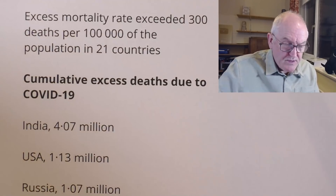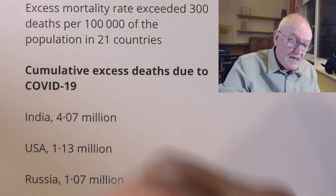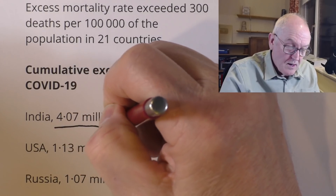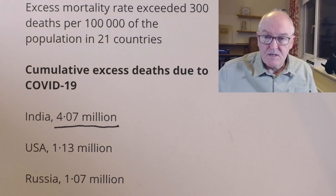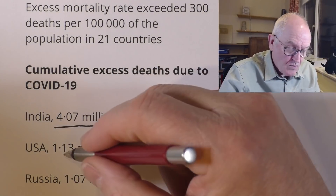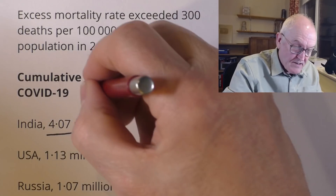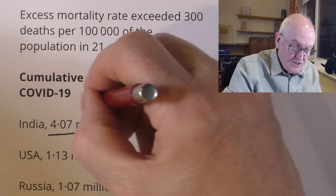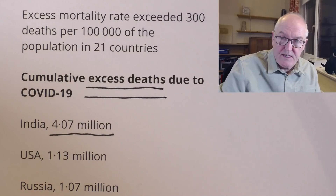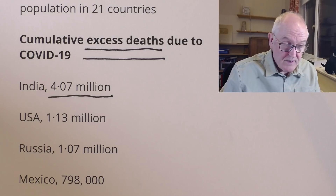Looking at numbers first — cumulative excess deaths due to COVID-19. India had 4 million, but of course India has a population of 1.3 to 1.4 billion, so you would expect that to be highest. The United States had 1.13 million — and remember, this is excess deaths as calculated, not that which is recorded in official data. Russia had just over a million.